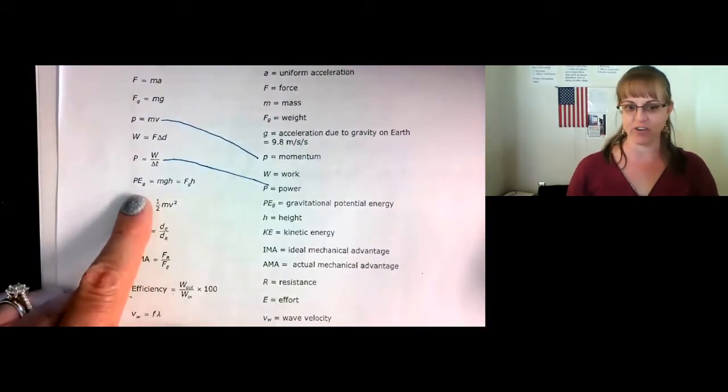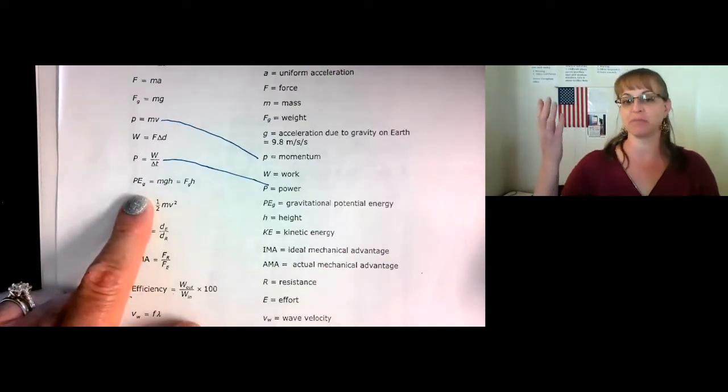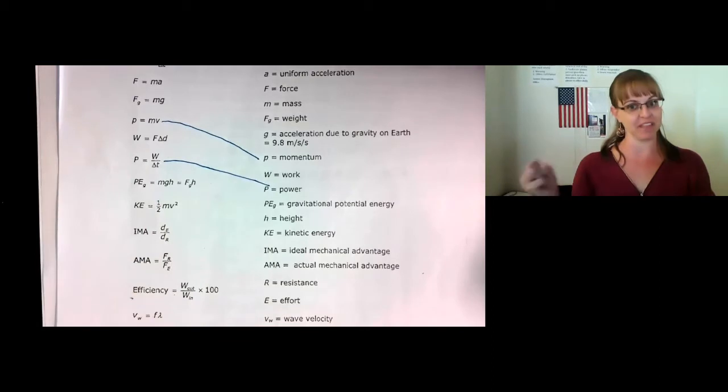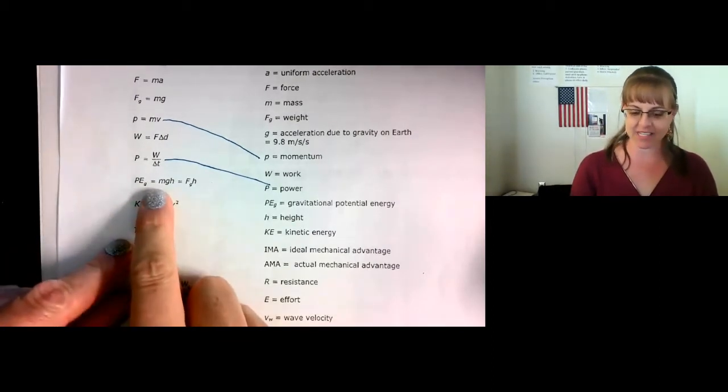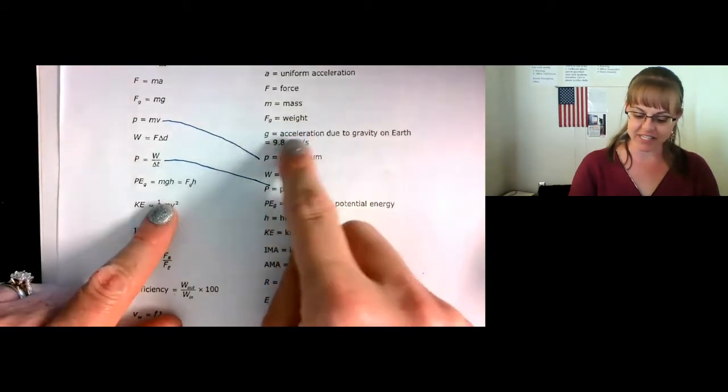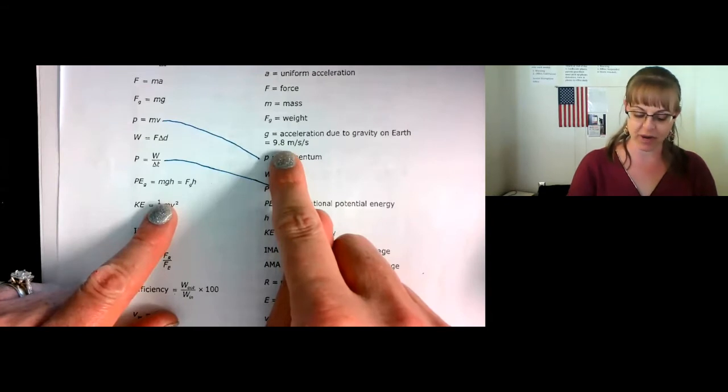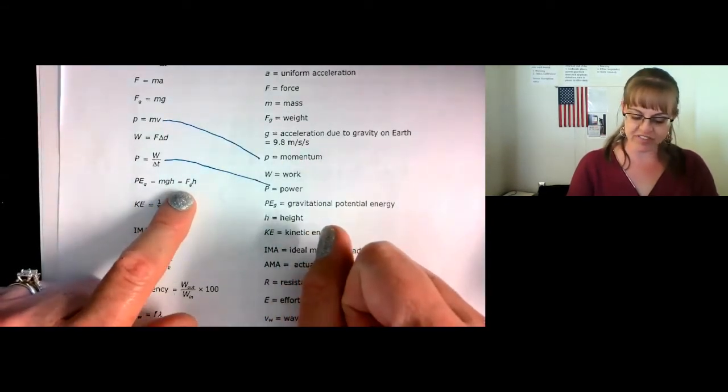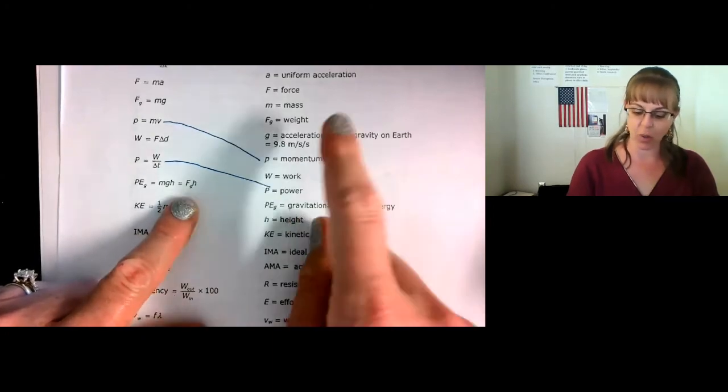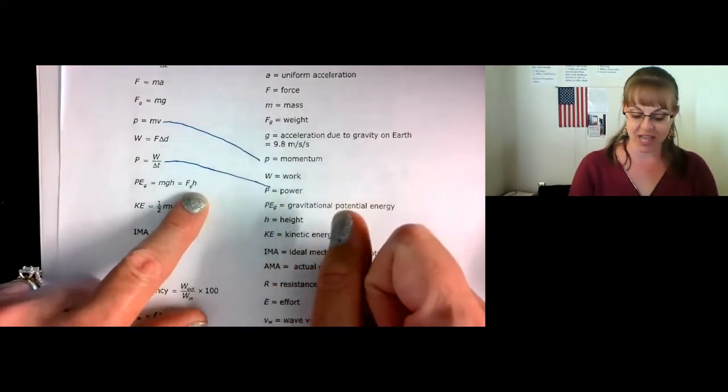The formula for potential energy due to gravity, in other words, this is from something that falls, not from something that's stretched or compressed, is equal to mass times the acceleration due to gravity, which happens to be 9.8 meters per second squared, times the height, which is equal to the force of gravity, which by the way is the weight of an object, times the height.